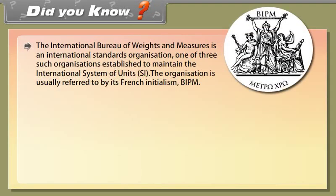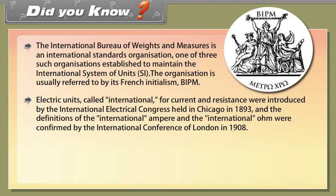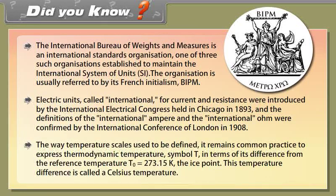Did you know? The International Bureau of Weights and Measures is an international standards organization, one of three such organizations established to maintain the International System of Units (SI). The organization is usually referred to by its French initialism BIPM. Electric units called international for current and resistance were introduced by the International Electrical Congress held in Chicago in 1893, and the definitions of the international ampere and international ohm were confirmed by the International Conference of London in 1908. The way temperature scales used to be defined, it remains common practice to express thermodynamic temperature (called T) in terms of its difference from the reference temperature T zero equals 273.15 Kelvin, the ice point. This temperature difference is called a Celsius temperature.